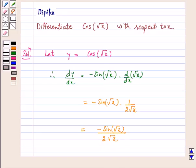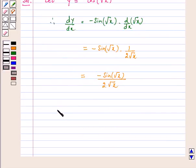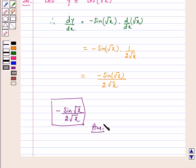Hence we have differentiated our given function and our answer is minus sin root x upon 2 root x. I hope the question is clear to you. Bye and have a nice day.